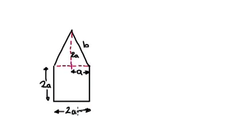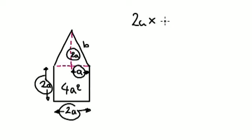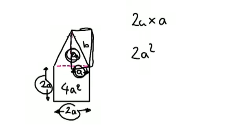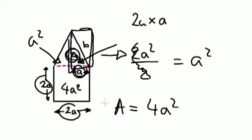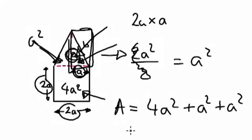So let's do this again. This times this gives 4a squared. And now we get 2a times a, which is 2a squared, divided by 2 because that gives us the rectangle and we divide by 2 for the triangle. These two cancel, leaving a squared. So the area here is a squared, and then we've got another a squared for the other triangle. So the formula: 4a squared, plus a squared, plus a squared, plus another a squared for this triangle.